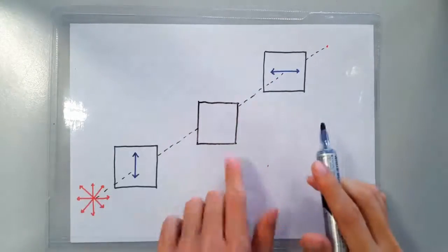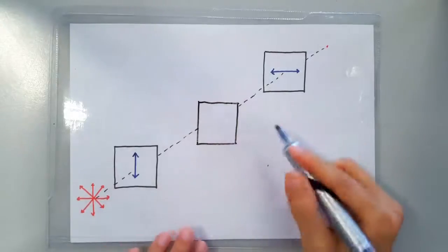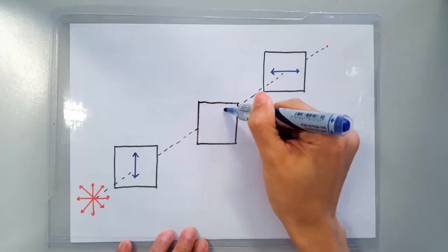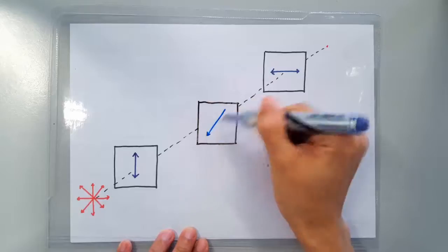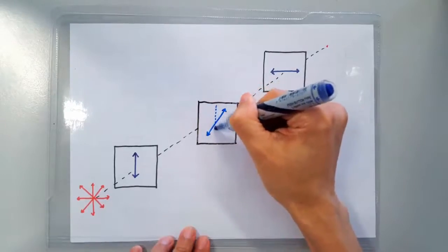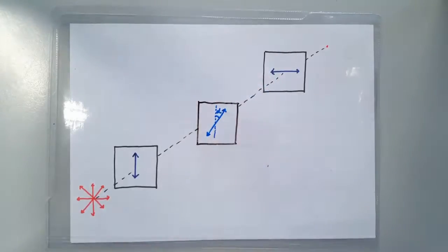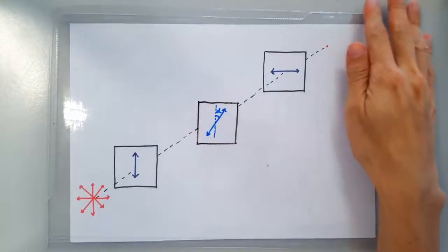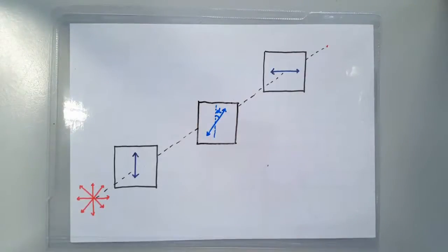If we insert a third polarizer in between the original two, with a polarization angle that's misaligned with the original one by, say, an angle alpha, then we actually get some light after the three polarizers.